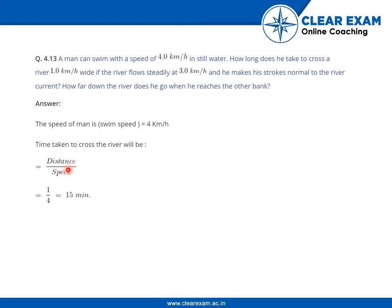And the speed of the man is 4 kilometers per hour. So ideally, if there was no flow of river, if the river was still, then it should have taken 15 minutes for that man to cross that particular river.